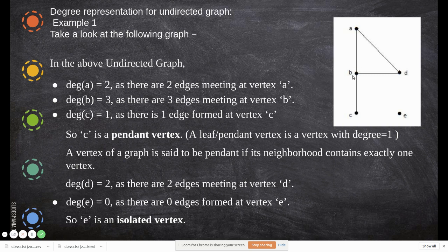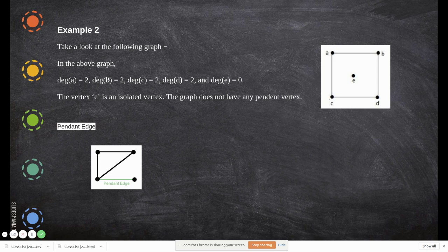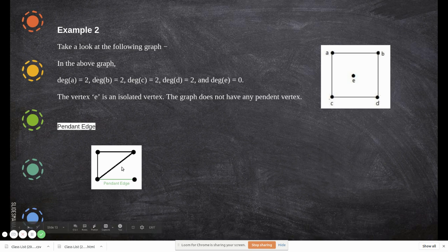The edge connected to a pendant vertex is also called a pendant edge. E is said to be an isolated vertex. Another example: a graph where E is isolated doesn't have a pendant vertex because all other nodes have degree greater than 1 — A has degree 2, B has degree 2, and so on. Whereas in another graph, a node with only one neighbor is a pendant vertex, and the connecting edge is a pendant edge.